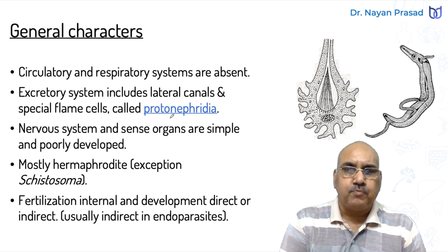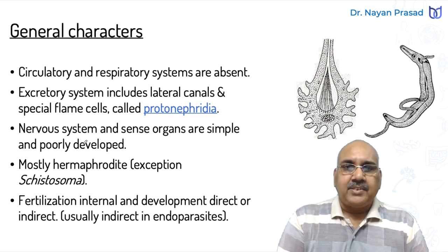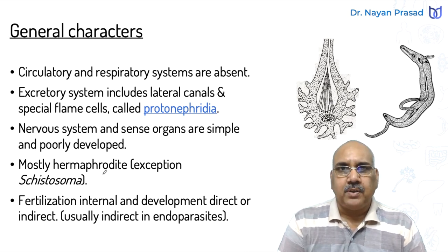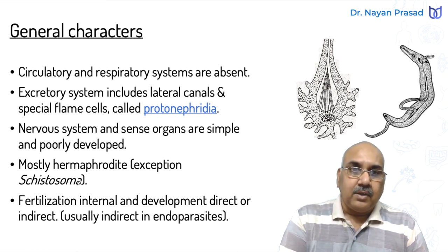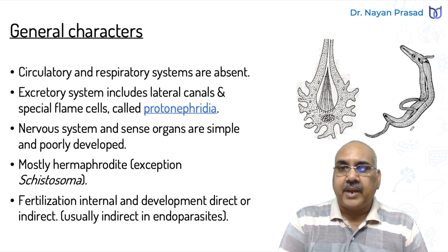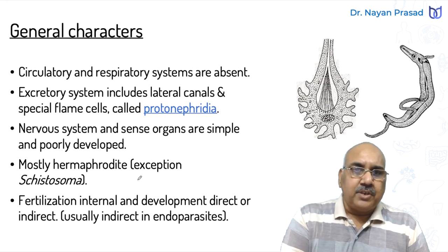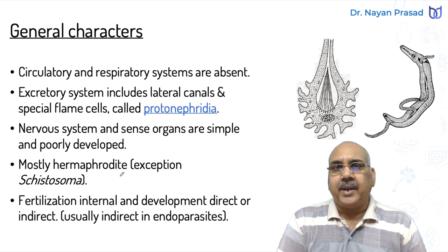The nervous system and sense organs are simple and poorly developed, especially in parasitic forms. They are mostly hermaphrodite, bisexual. Tapeworm and liver fluke are bisexual; one exception is Schistosoma. Schistosoma is the blood fluke, in which males and females are separate individuals — male reproductive organs in one, female reproductive organs in another. Otherwise most examples of Phylum Platyhelminthes are bisexual.